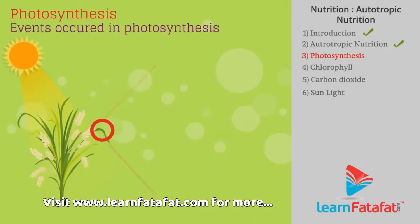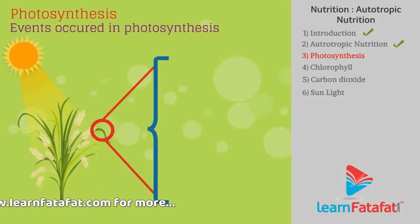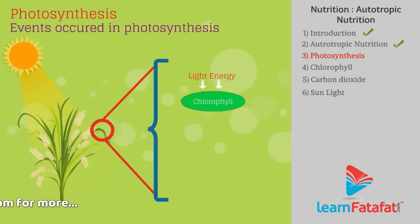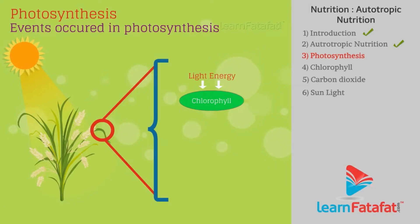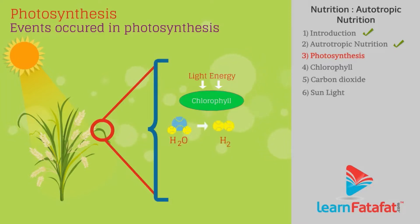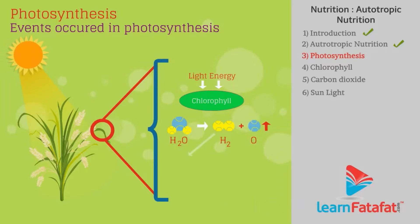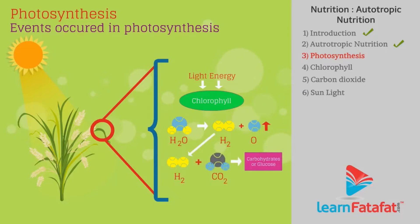Events occurring in photosynthesis: First, light energy is absorbed by chlorophyll. Second, light energy is converted to chemical energy by chlorophyll and used for breaking water molecules into hydrogen and oxygen. Third, reduction of carbon dioxide to carbohydrates or glucose.